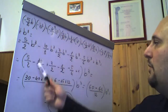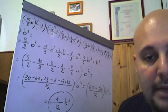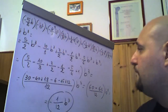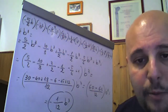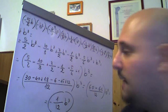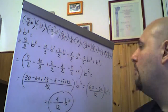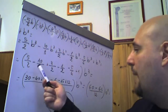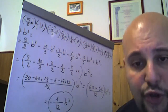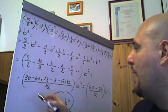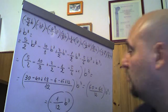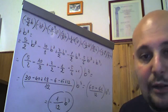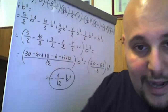Sommiamo con minimo comune multiplo fra 2, 3, 2, 2, 4: è 2² × 3 = 12. Calcoliamo: 12/2 × 5 = 30; 12/3 × (−10) = −40; 12/2 × 3 = 18; 12/2 × (−1) = −6; 12/4 × (−5) = −15; 12/1 × 1 = 12. Positivi: 30 + 18 + 12 = 60. Negativi: −40 − 6 − 15 = −61. Totale: 60 − 61 = −1. Risultato: −1/12 b³, monomio di terzo grado con coefficiente −1/12.